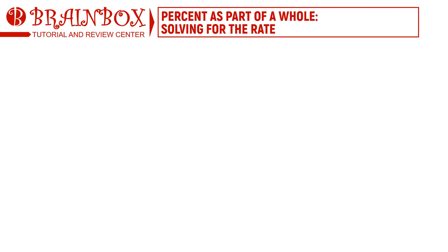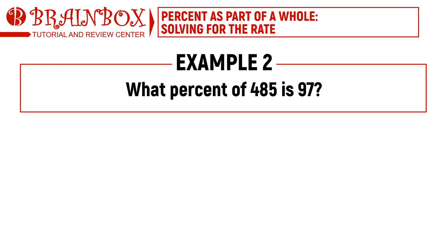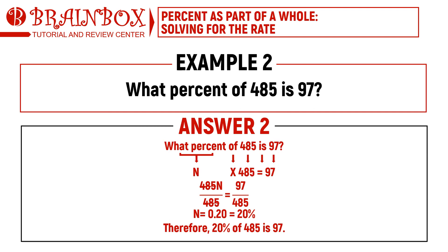Next example: What percent of 485 is 97? Translating to a mathematical equation: 'what' is N, 'of' implies multiplication, 485 is our base, 'is' implies an equal sign, and 97 is our percentage. We get N times 485 equals 97. Dividing both sides by 485, N equals 0.20. Converting to percent form by moving the decimal two places to the right, we get 20%. So 20% of 485 is 97.